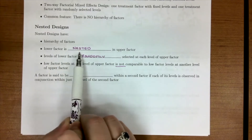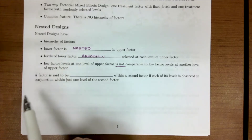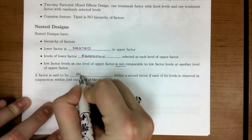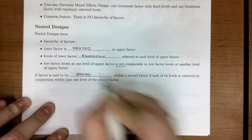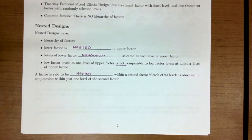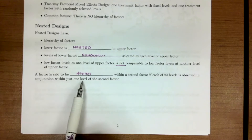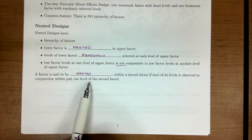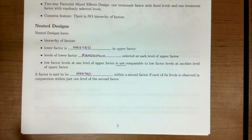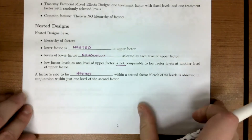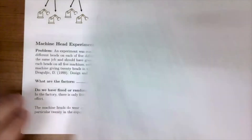We've also talked about the word nested. A factor is said to be nested within a second factor if each of its levels is observed in conjunction with just one level of the second factor. Let's take these words and put them into a picture with an example.